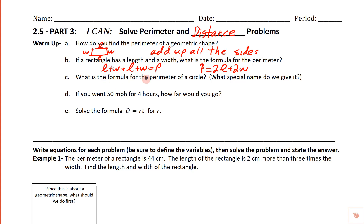What's the formula for the perimeter of a circle, and what special name do we give it? The perimeter of a circle is still the distance around the outside. The special name for that is called the circumference. The formula is two times pi times R. Don't confuse that with pi R squared — pi R squared is the formula for the area of a circle.